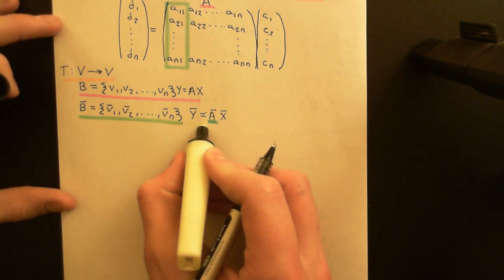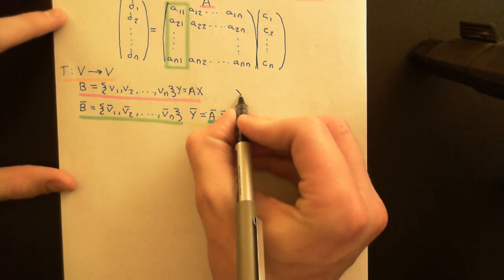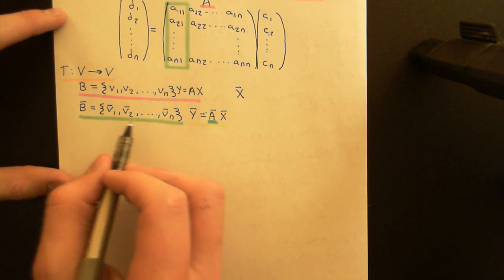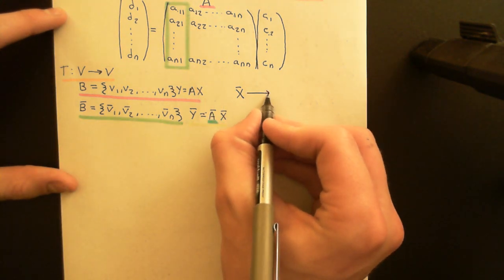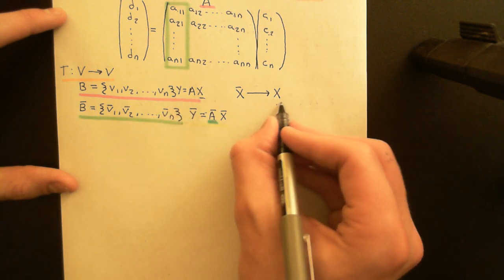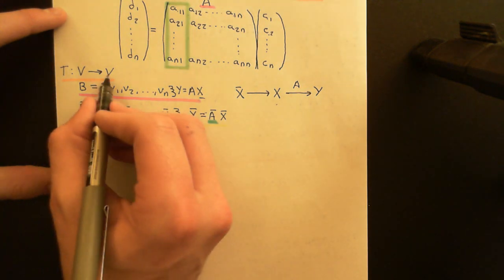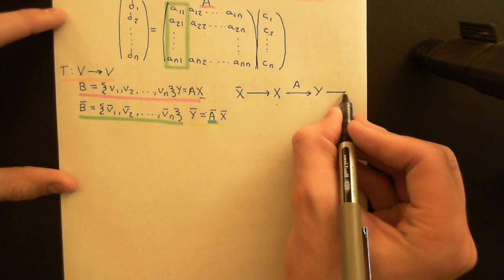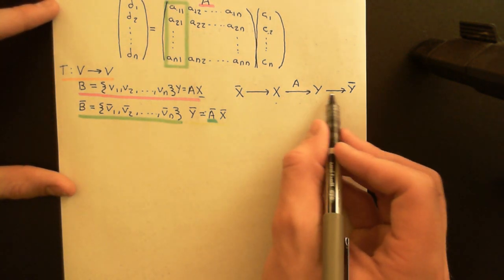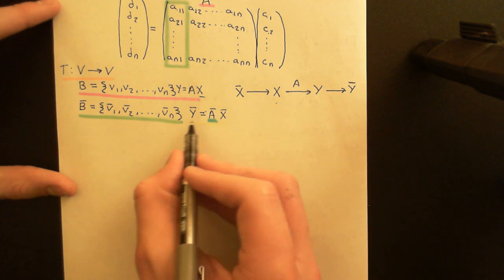My approach to finding A-bar is as follows. I'm going to start with the coordinates of a vector in the domain vector space according to basis B-bar, then transform those into coordinates with respect to basis B. If I do that, I can apply the matrix A, which will give me the coordinates in the codomain with respect to basis B. Then all I need to do is transform those back into coordinates with respect to basis B-bar. I capture all three processes in the new matrix A-bar.